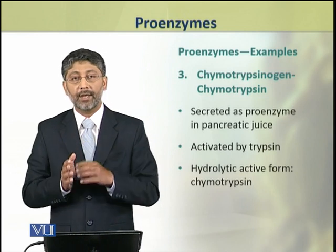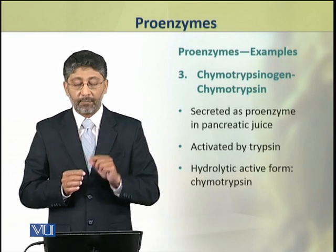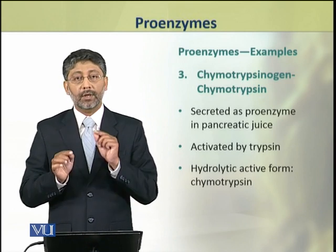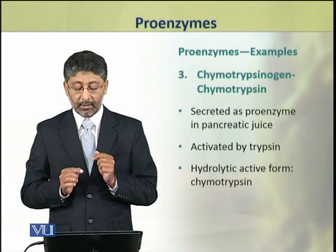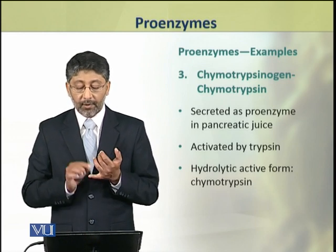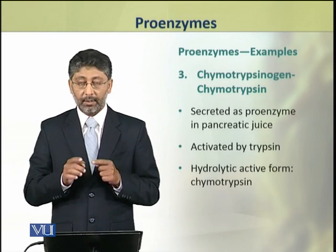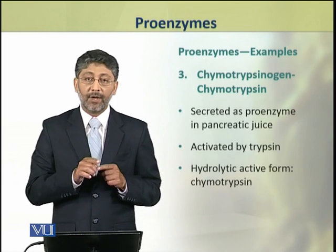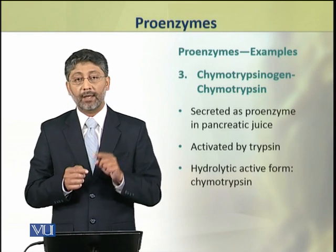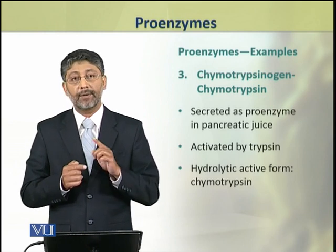The third example of a proenzyme is chymotrypsinogen, which is activated into chymotrypsin. Chymotrypsinogen is secreted as a proenzyme in the pancreatic juice. It is activated by trypsin, and its hydrolytic active form is chymotrypsin.